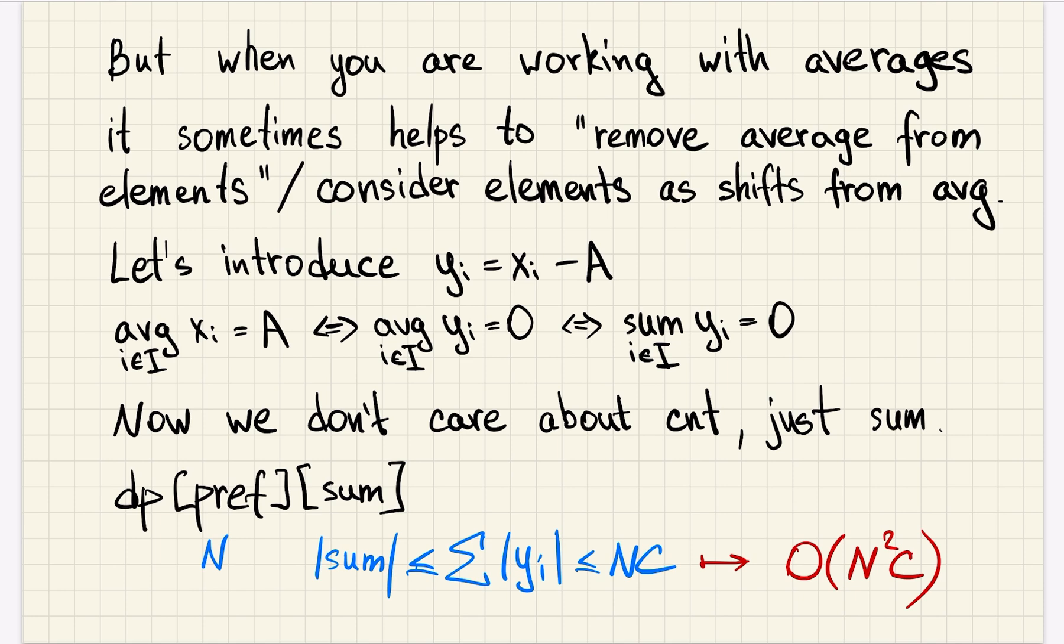Now y_i is how different the element is from the average. So average of some set of x_i is A if and only if average of the corresponding set of y_i is zero. Looks like it's the same thing, but it's actually better because average is zero if and only if the sum is zero.